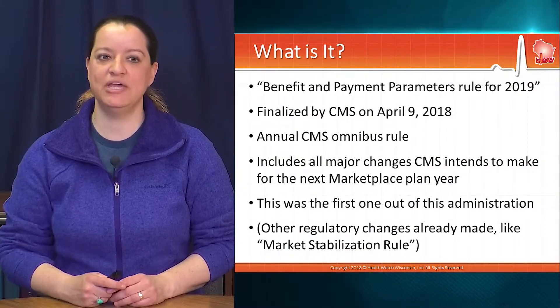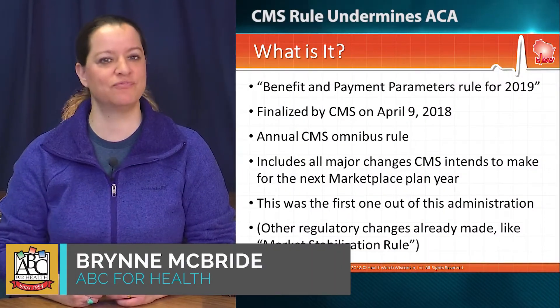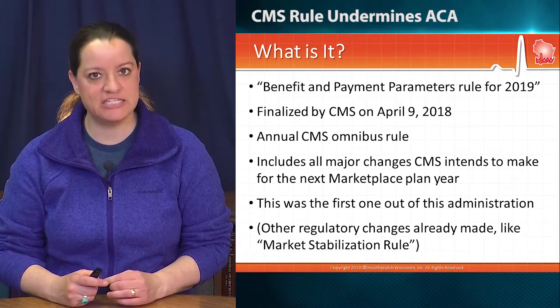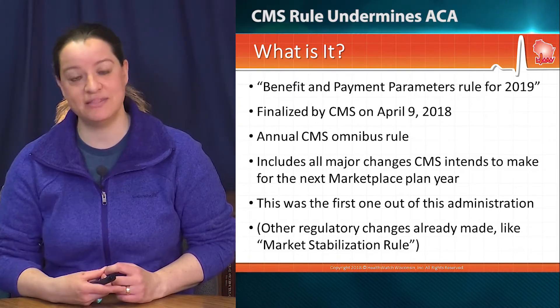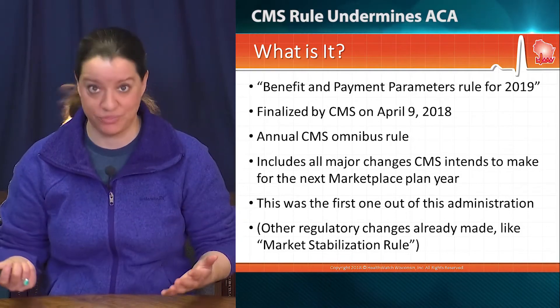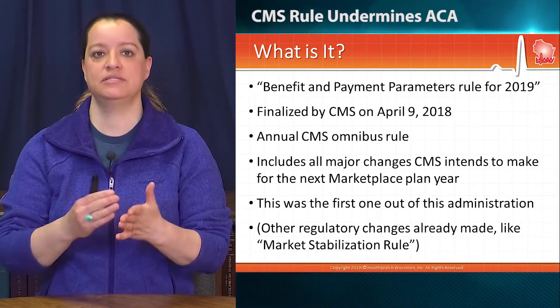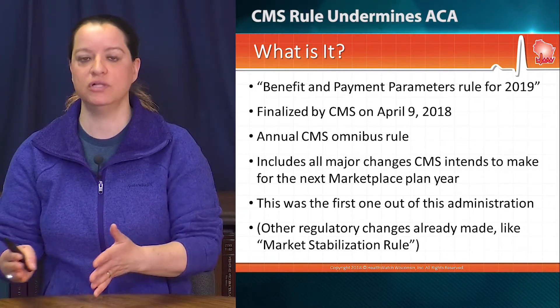A new federal rule dramatically undermines insurance reforms of the Affordable Care Act. It's being called the Benefit and Payment Parameters Rule for 2019. This is a rule that was finalized by the Centers for Medicare and Medicaid Services on April 9th, also being referred to as the April 9th Rule, which is actually an annual Centers for Medicare and Medicaid Services omnibus rule.